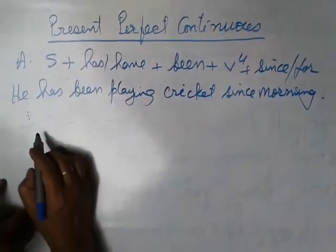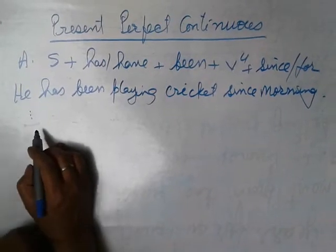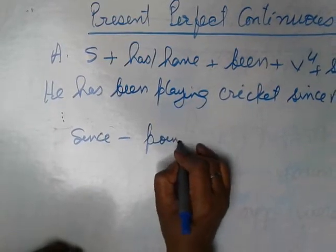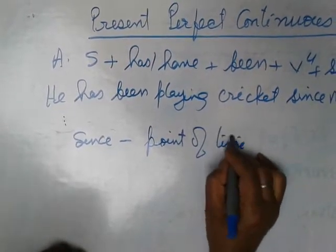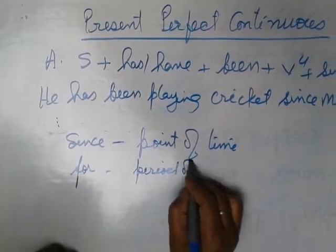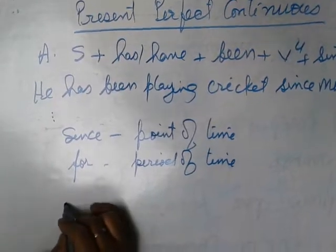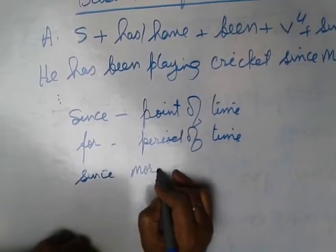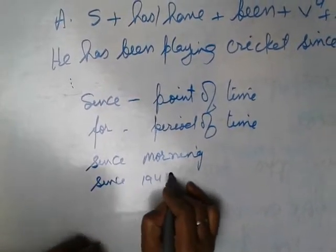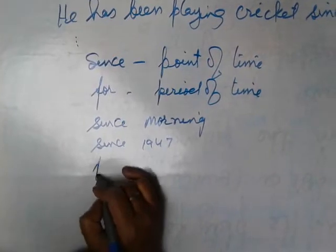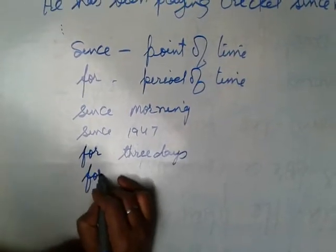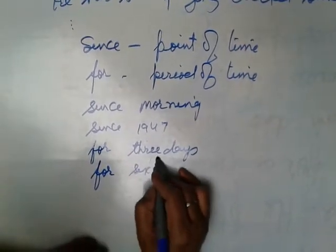So you have to know about the use of since and for. Since is used for point of time, and for is used for period of time. Just like, for example: since morning, since 1947. For is also for three days, for sixty years.